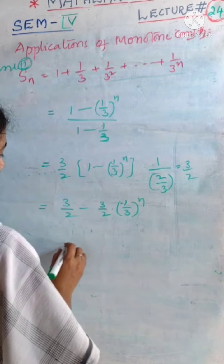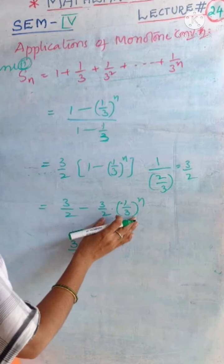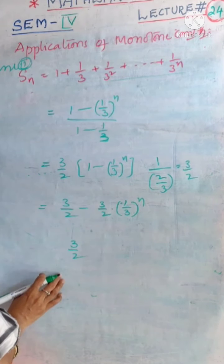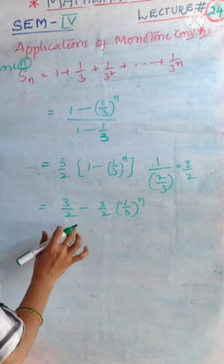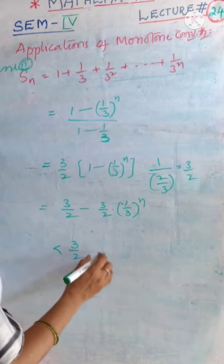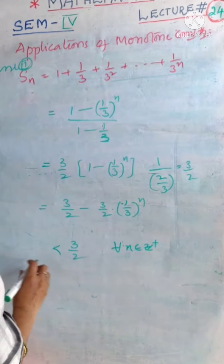Now observe that from 3 by 2 some value is subtracted here. What is the relation between the Sn term and 3 by 2? This term is obviously less than 3 by 2 because some value is subtracted here. It is being true for all terms of the sequence.